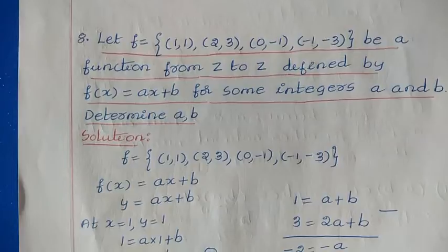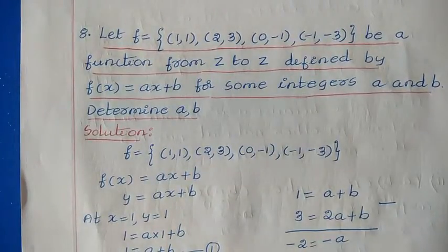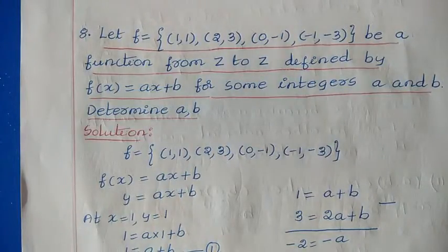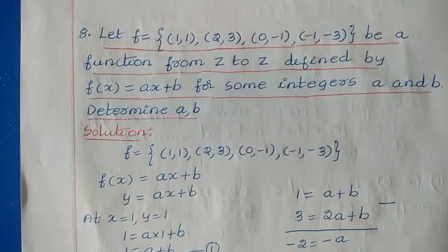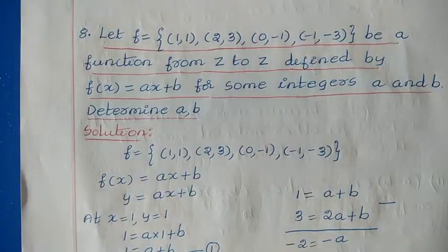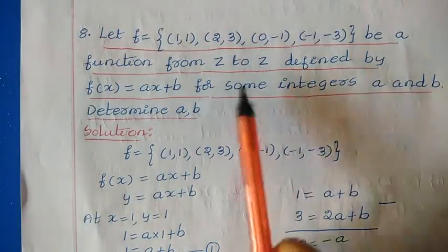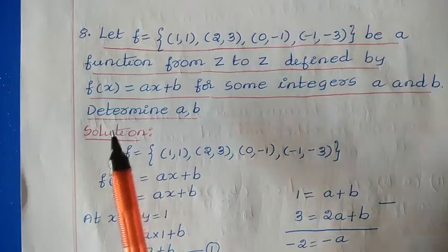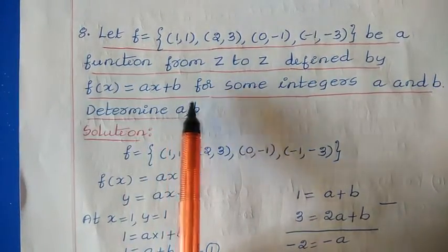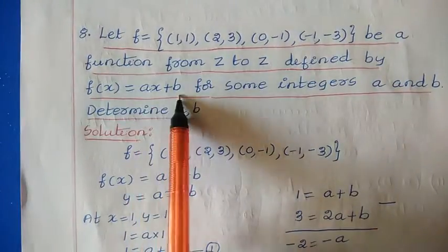Next, question 8: let f = {(1,1), (2,3), (0,-1), (-1,-3)} be a function from ℤ to ℤ defined by f(x) = ax + b for some integers a and b. Determine a and b. Here they have given a function with different ordered pairs: (1,1), (2,3), (0,-1), (-1,-3). The function is defined on integer values, z to z — positive or negative integers — and f(x) = ax + b. We need to find the values of a and b.